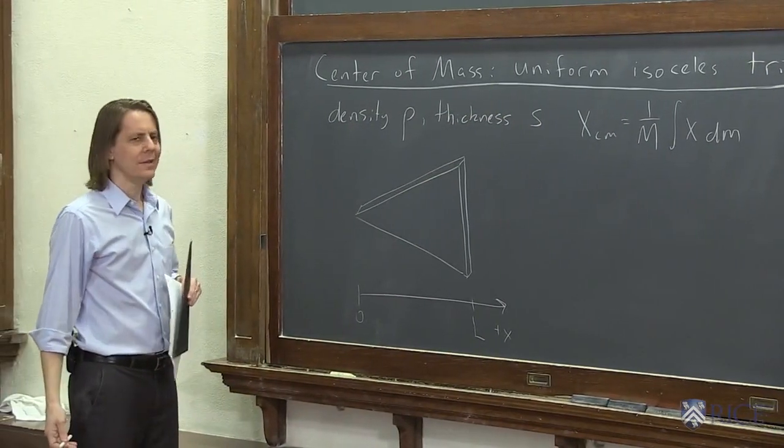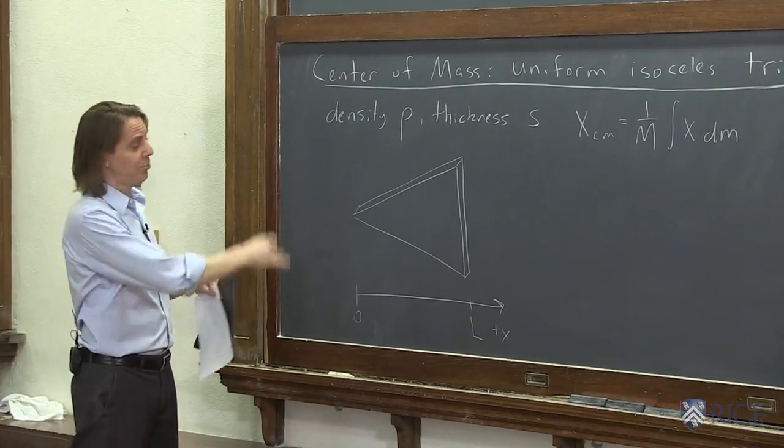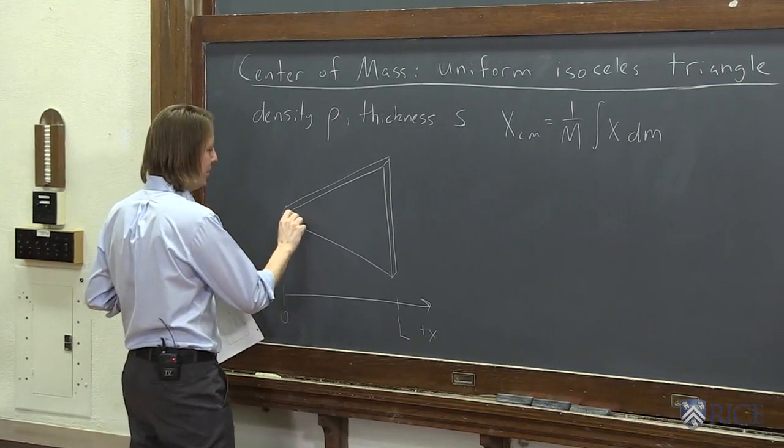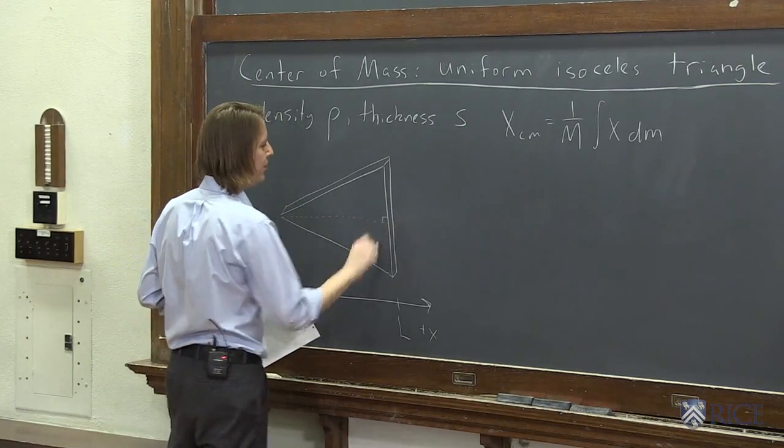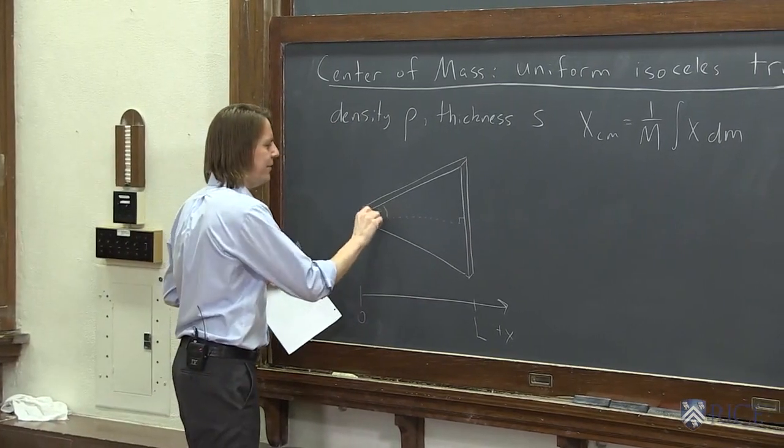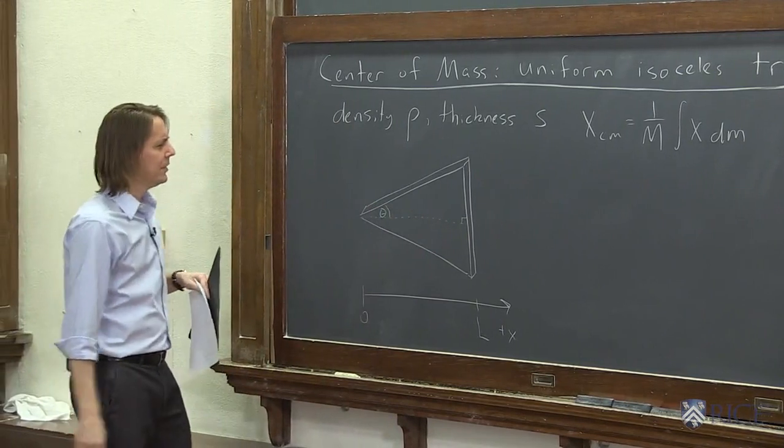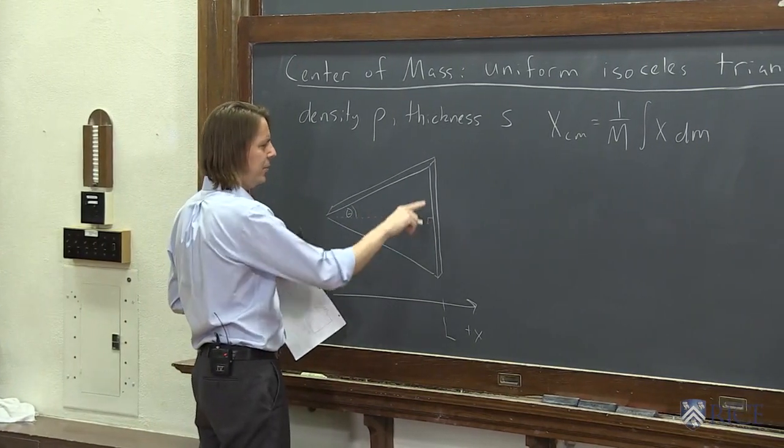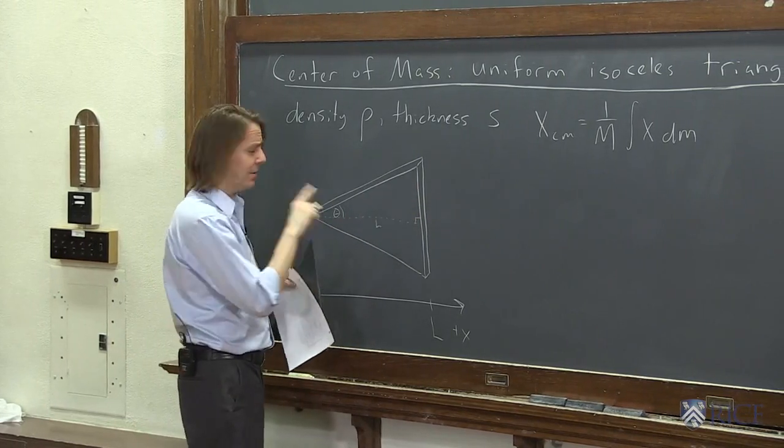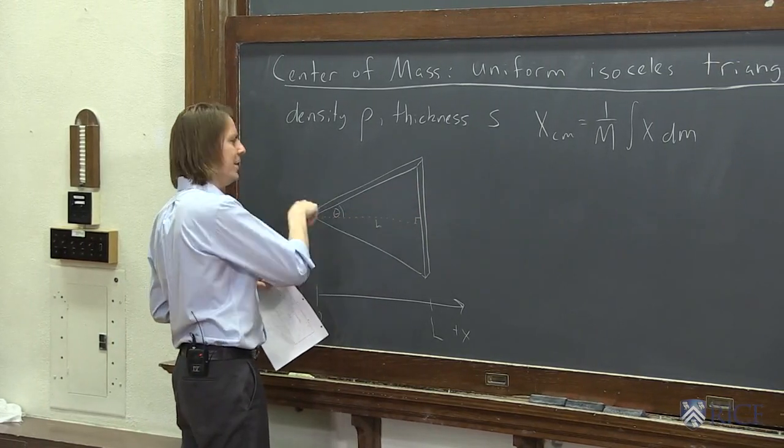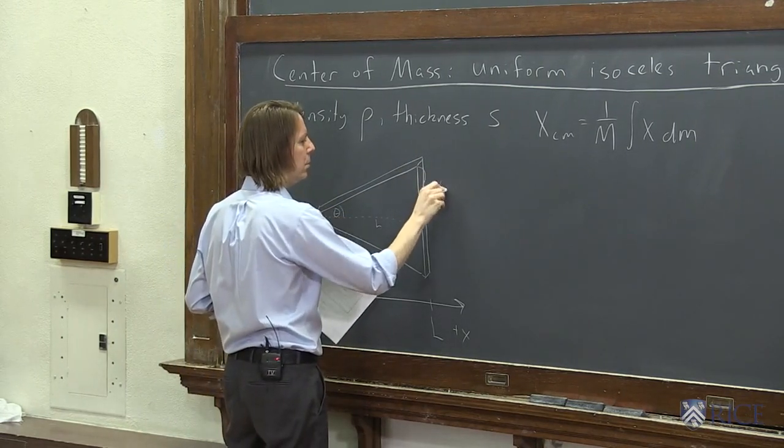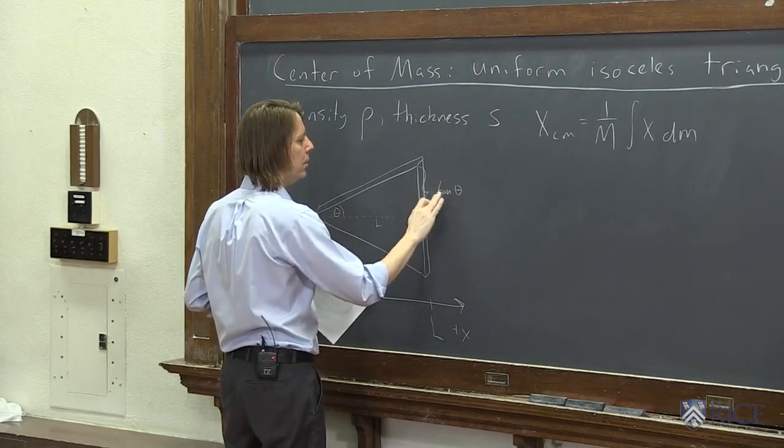So let's see. One thing we need is the total mass in terms of the parameters we've been given. Well, I don't know. I'm not really great at geometry. I was more of an algebra guy. I had Mr. Reid for geometry. He was good. But I do know, let's see, we could. I'm going to go with the angle, the half angle there. I'm going to call that theta. And I know that this is then L. And I know that this must be L times the tangent of theta.